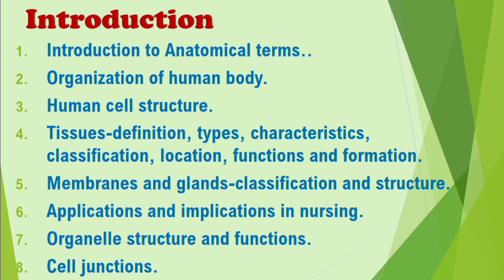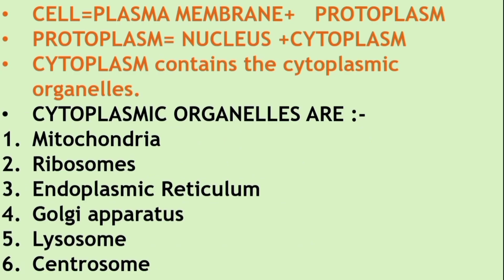The third chapter is the human cell structure. The first structure of the cell is the plasma membrane, nucleus, mitochondria, ribosomes, and endoplasmic reticulum.